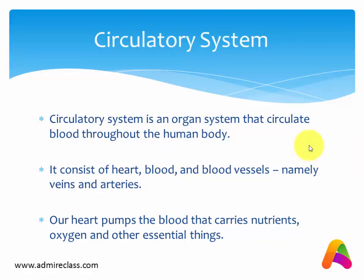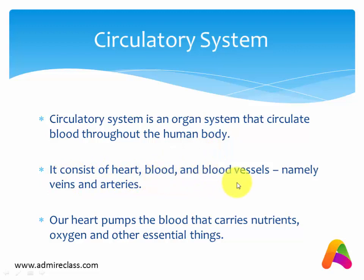Now, the circulatory system — what is the circulatory system? It is an organ system that circulates blood throughout the human body. It consists of heart, blood, and blood vessels, namely veins and arteries.